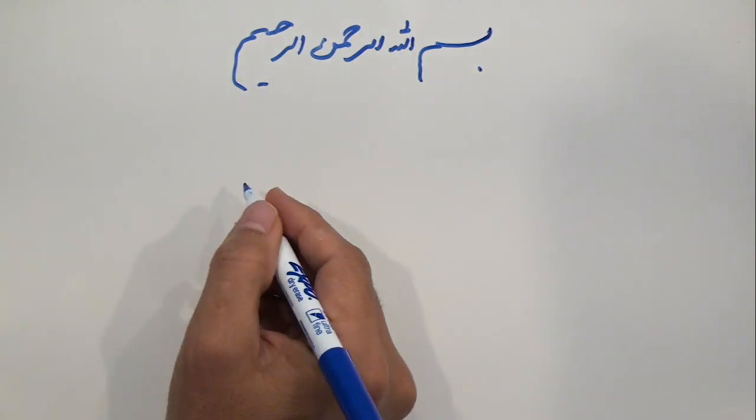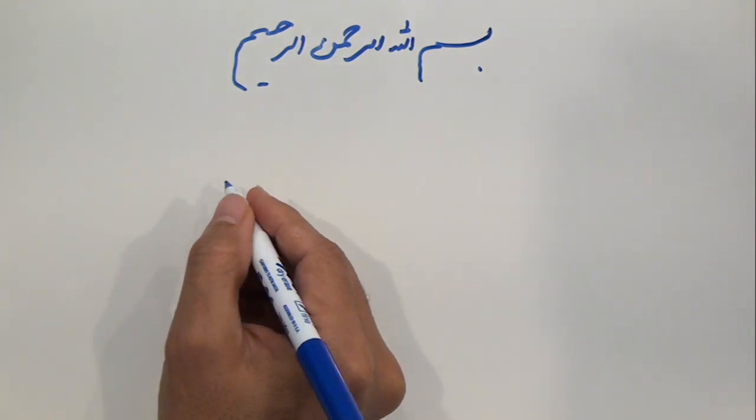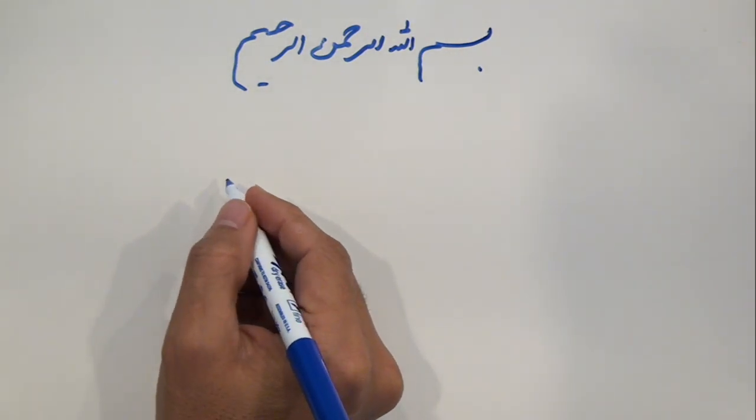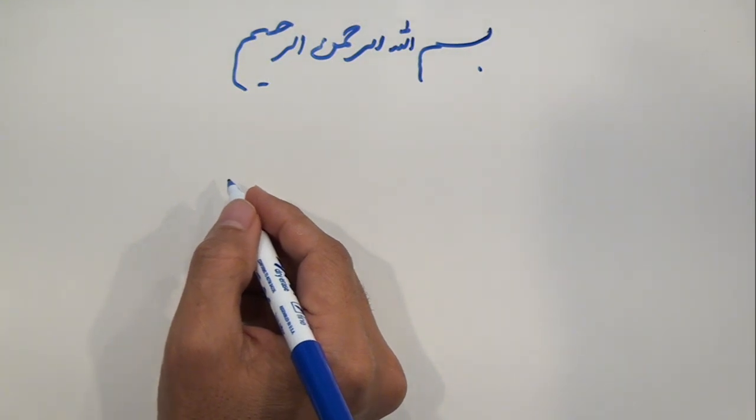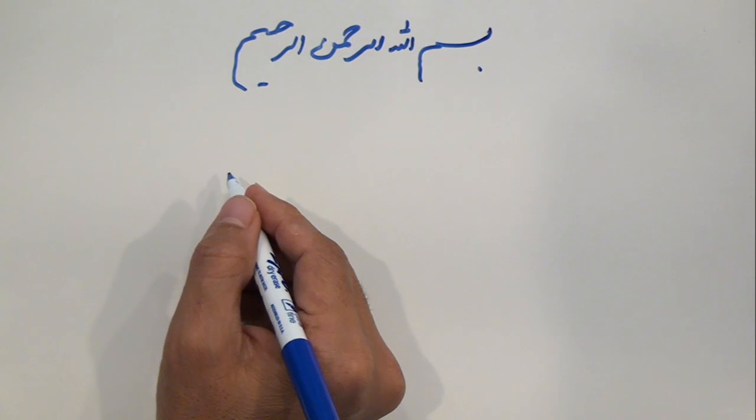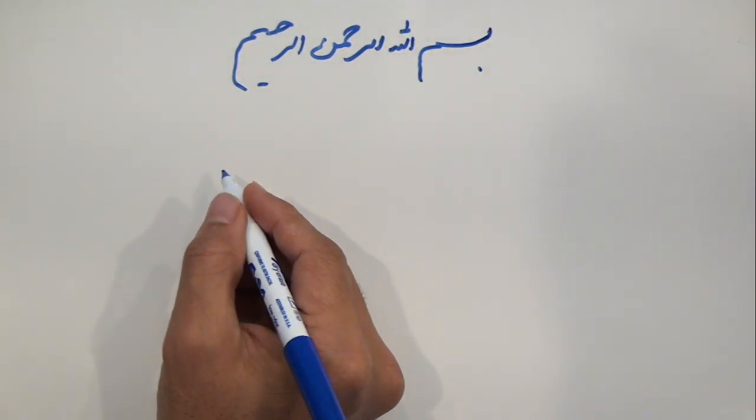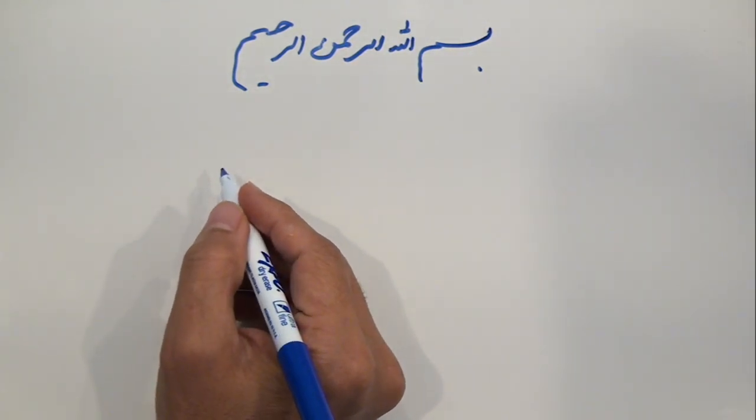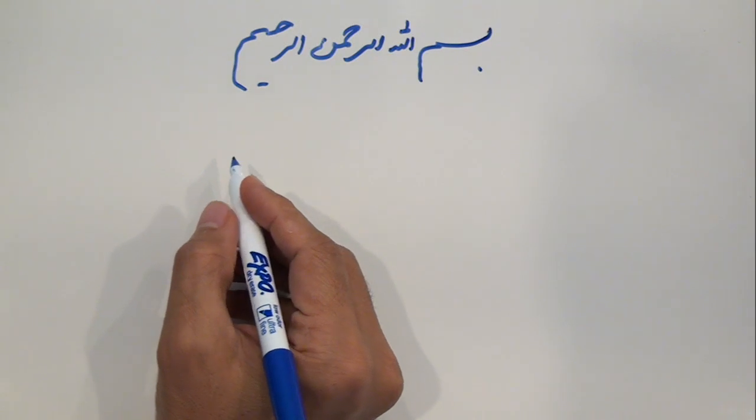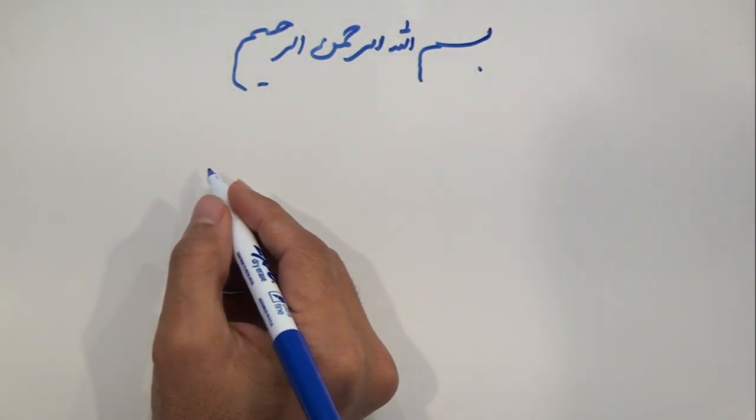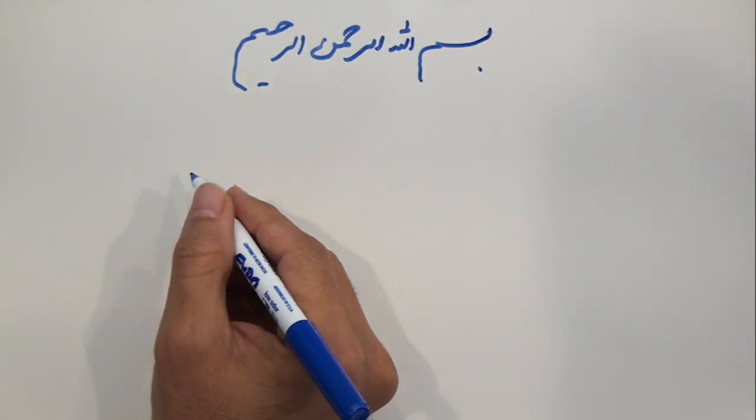In response to the Umari argument for proving an excellent quality in Abu Bakr or even proving his right to succession to the Nabi sallallahu alayhi wa alihi wasallam because he led prayers allegedly in the last days of the life of Rasulullah sallallahu alayhi wa alihi wasallam, so far we presented the following: